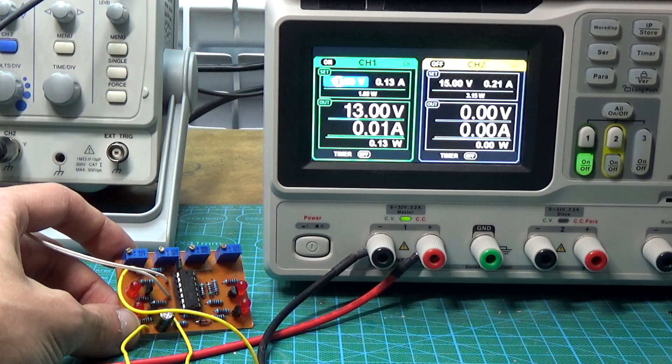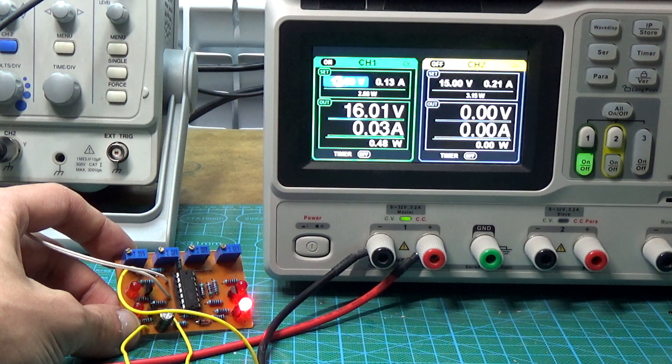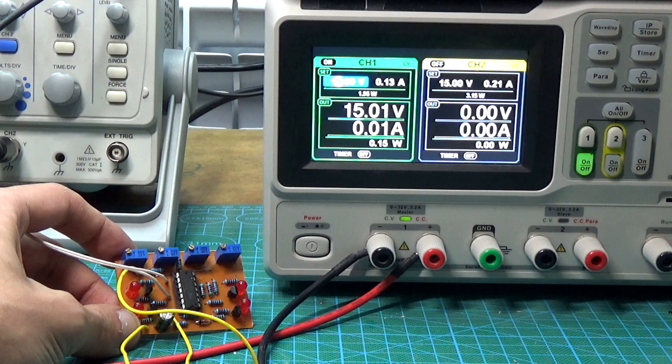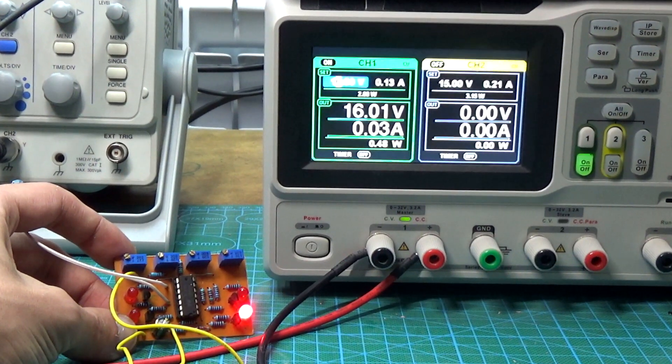Do the same in the case of over-voltage protection. For example, we need the protection to work at 16V, so set these 16V on the laboratory block and rotate the trimmer until the LED turns on.